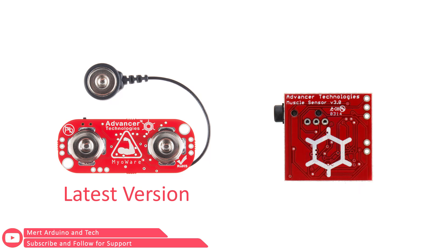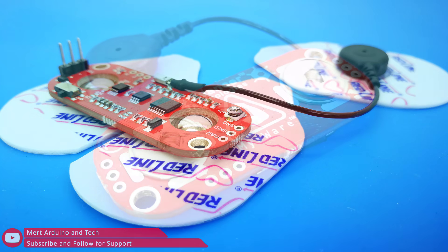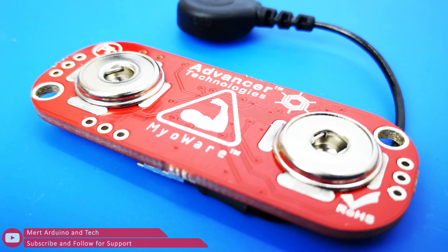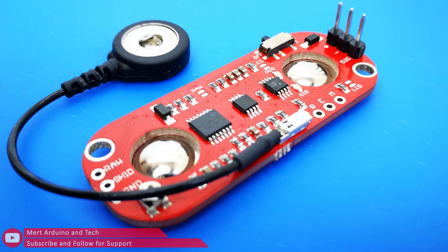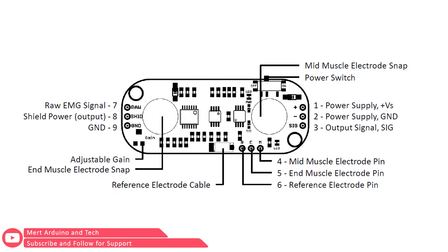MioWare is the latest version of the muscle sensor and has a wearable design that allows you to connect your biomedical pads directly to the board. This board also features a number of new features, including a single supply voltage from 3.1 to 5 volts, indicator LED, and an on-off switch.